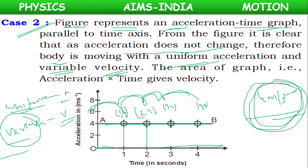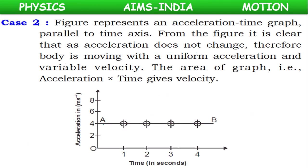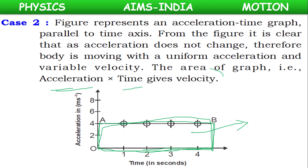In this case, if we draw perpendicular lines from A and B to the x-axis, we get a rectangle. The area of this rectangle gives the velocity of the body.